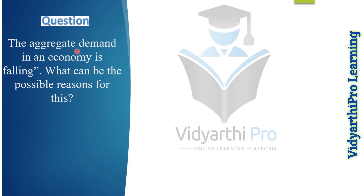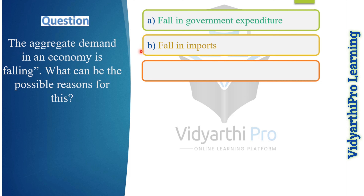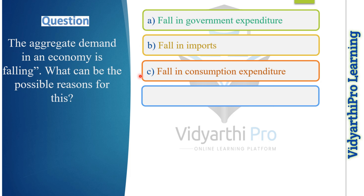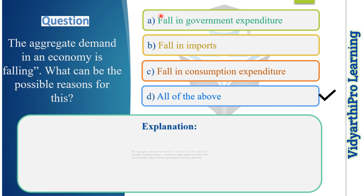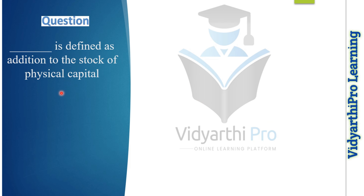Our next question: the aggregate demand in an economy is falling — what can be the possible reasons? Options: fall in government expenditure, fall in imports, fall in consumption expenditure, or all of the above. The correct answer is option D, all of the above, because the aggregate demand curve shifts left when total consumer spending declines — consumers might spend less because the cost of living is rising or because government taxes have increased.